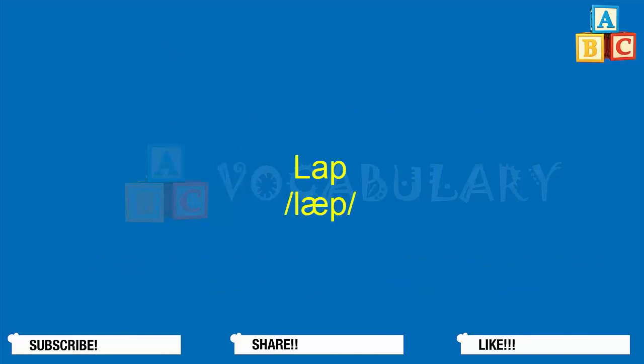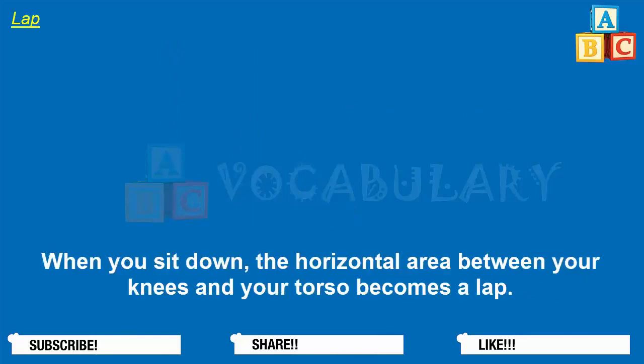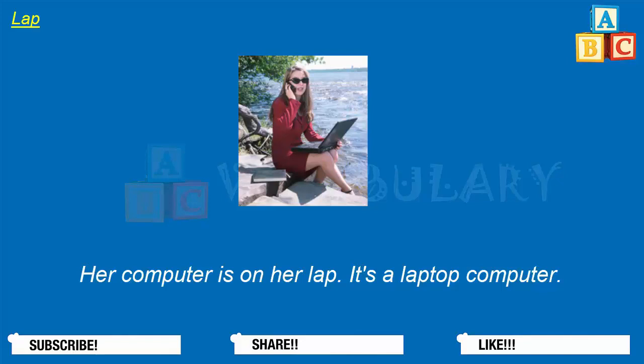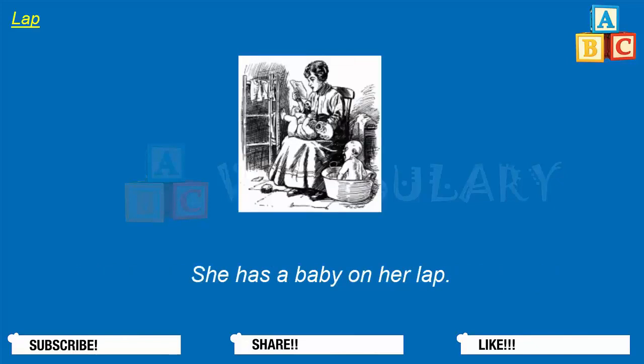Lap. When you sit down, the horizontal area between your knees and your torso is your lap. Her computer is on her lap — it's a laptop computer. She has a baby on her lap.